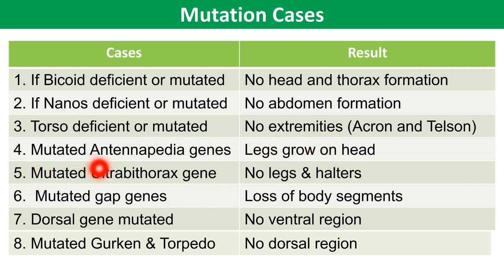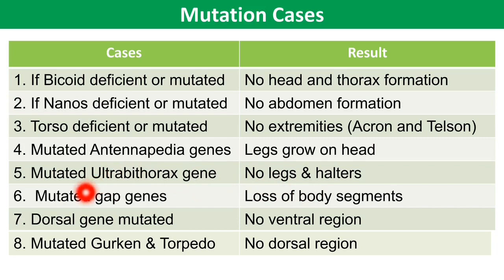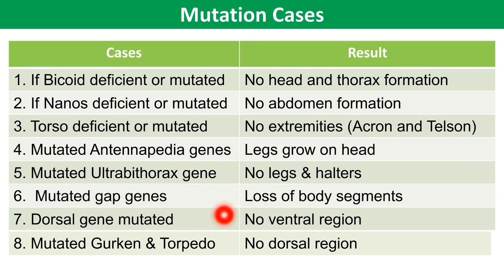If gap genes are mutated, this results in loss of body segments. In the case of dorsal gene mutation, since dorsal is for ventral fate formation, there will be no ventral region. In the case of mutated gurken and torpedo, this results in absence of the dorsal region.